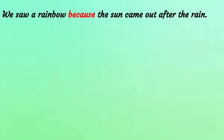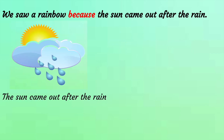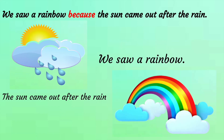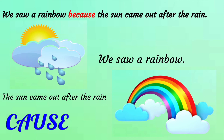We saw a rainbow because the sun came out after the rain. The sun coming out after the rain is the cause. Therefore, seeing a rainbow is the effect.